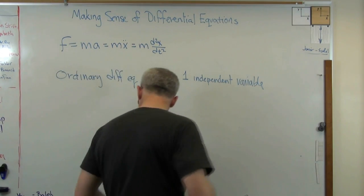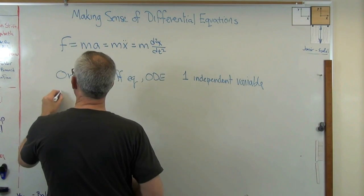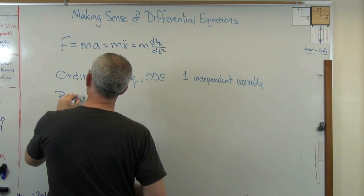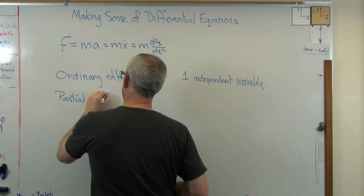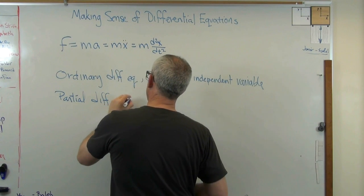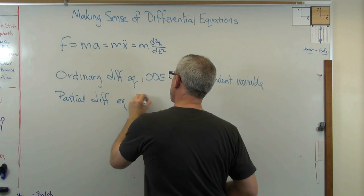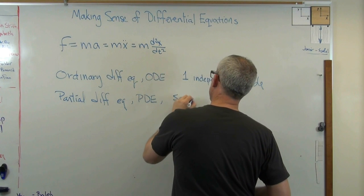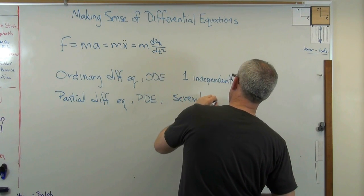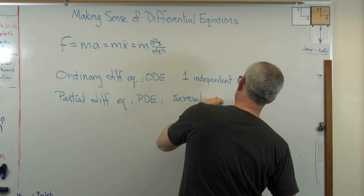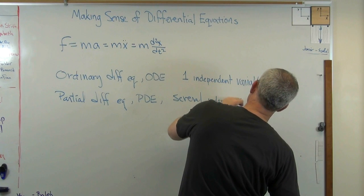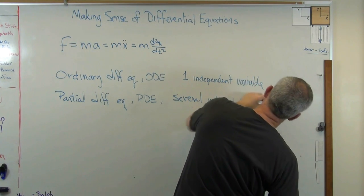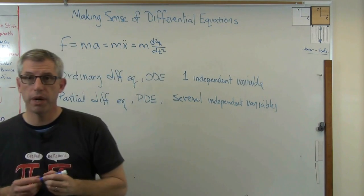The next distinction we make is something called a partial differential equation, sometimes called a PDE, and that means it has more than one independent variable.